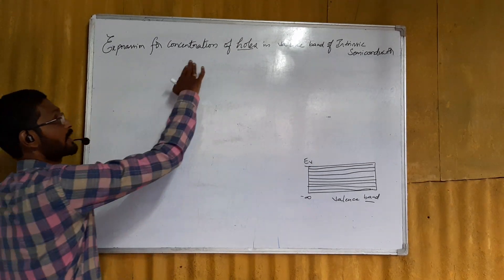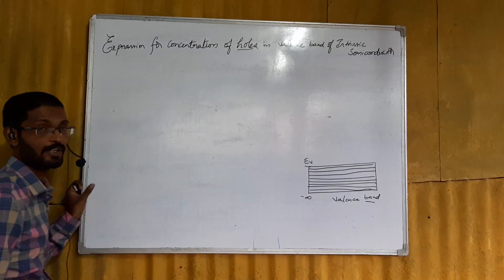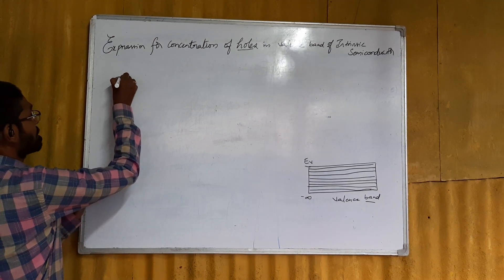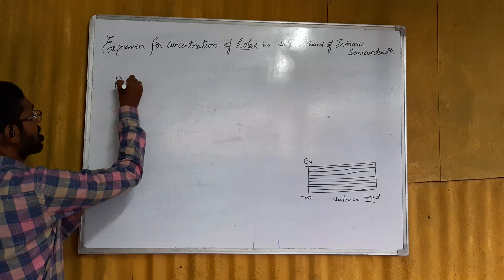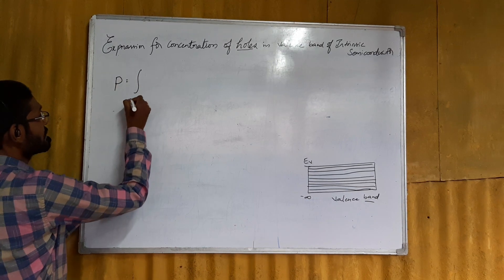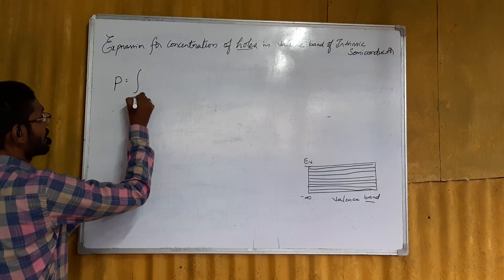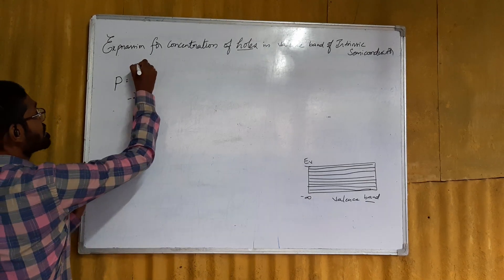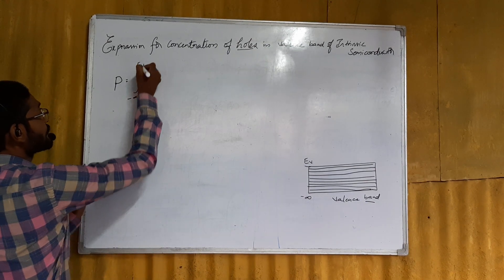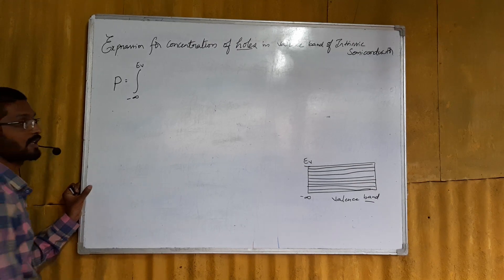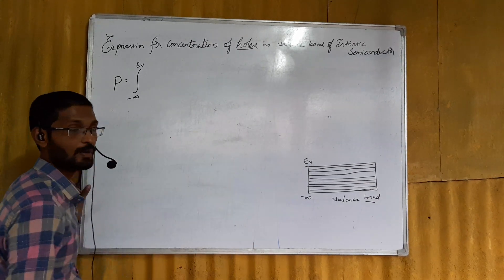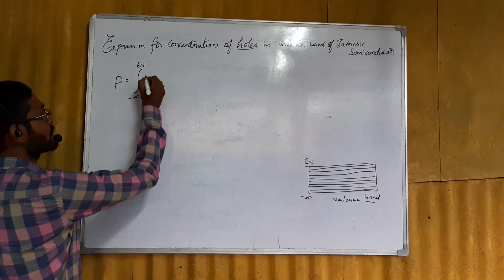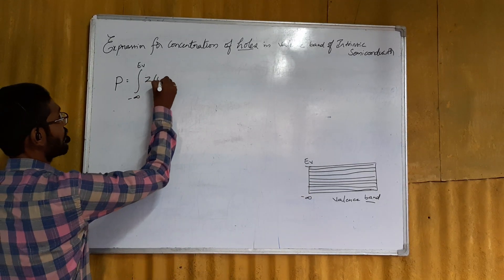The concentration of holes per unit volume is represented as small p, given as p equals the integral from minus infinity to Ev. The number of holes in the valence band equals the number of energy states per unit volume — the density of states Z(e) — multiplied by de.